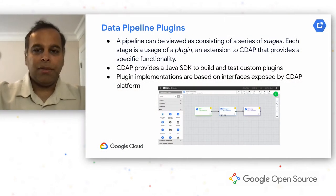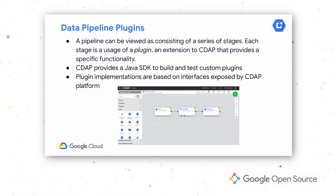Let's talk about plugin basics. Below is a screenshot from CDAP Studio. You can see three boxes which define how a data pipeline is actually architected. The pipeline reads data from a GCS bucket, does some transformations using a Wrangler plugin, and writes it back into BigQuery, Google's data warehouse. Each of these individual steps is what we call a stage of a pipeline, and each stage is the usage of a plugin. A plugin is an extension to CDAP providing specific functionality. It's a pluggable framework — you can write your own custom plugins using our Java SDK.